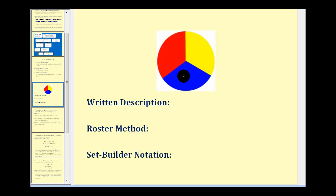So describe the set of these three colors. The written description could be B is the set of primary colors.